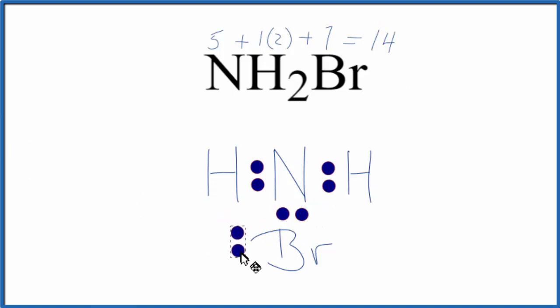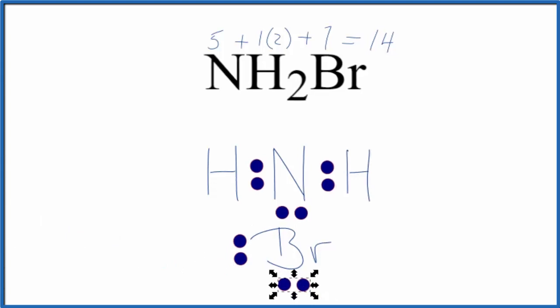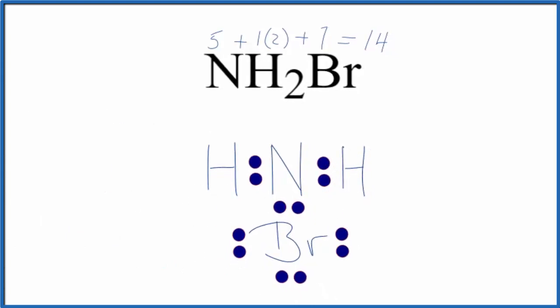Now we'll go around the outside atoms, the bromine here, and complete its octet. At this point we've used 12 valence electrons. We'll put the last two on top of the nitrogen, and this is our Lewis structure for NH2Br.